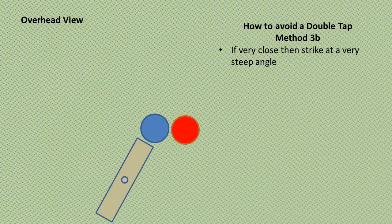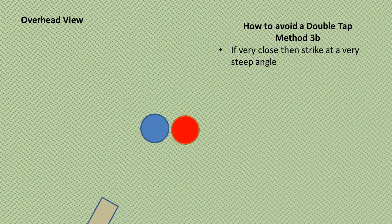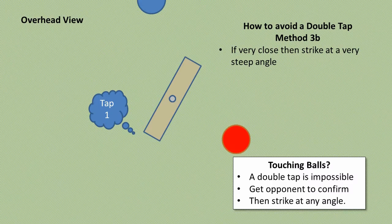Of course, if the two balls are touching then a double tap is not possible. But do make sure to confirm with your opponent that they are touching, and then you can play at any angle.